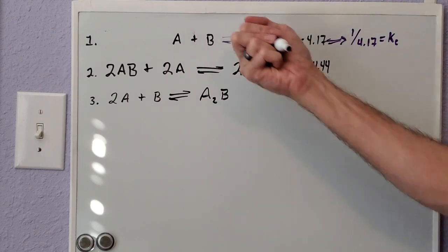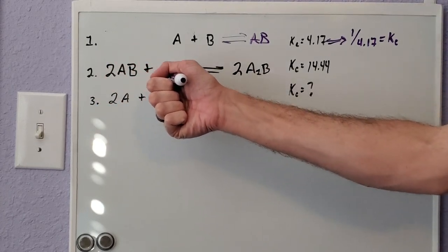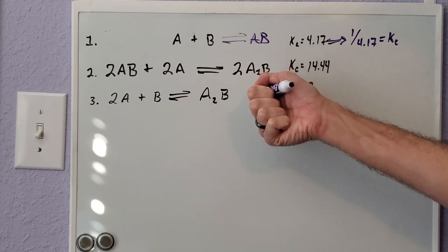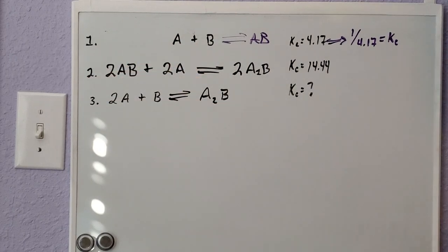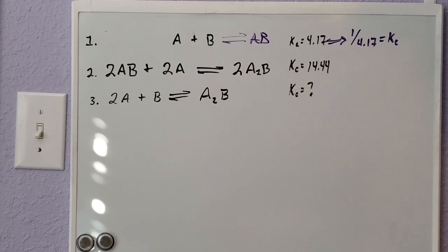Same kind of deal applies here. Whenever we look at our 2AB + 2A gives us 2A2B, here A2B is a product, or A is a reactant. This is what I told you to ignore for now, so let's continue to ignore for now. But the main problem comes about whenever we take a look at our 2A2B. We have two of them, we don't want two in our overall equation, we only want one. So in order to get our values correct here, we have to divide this entire equation by two.